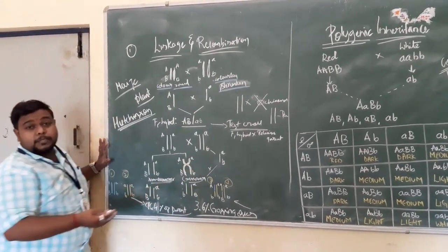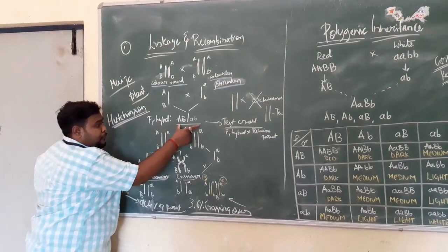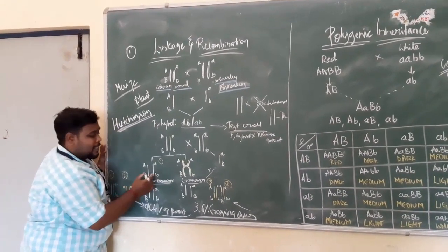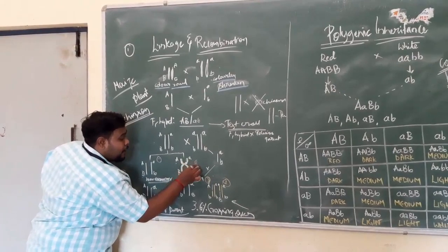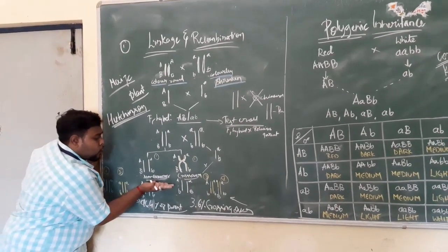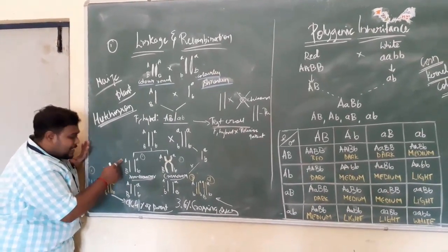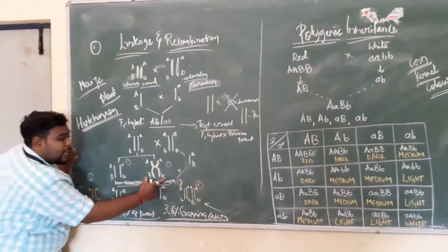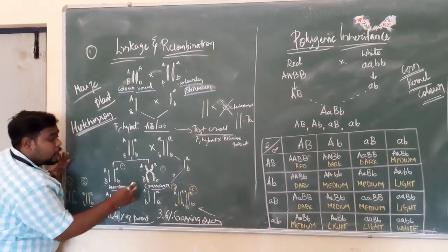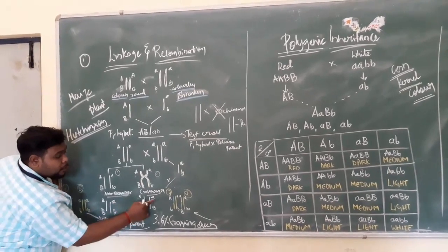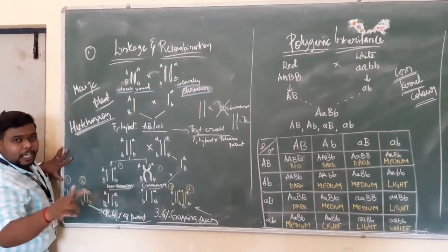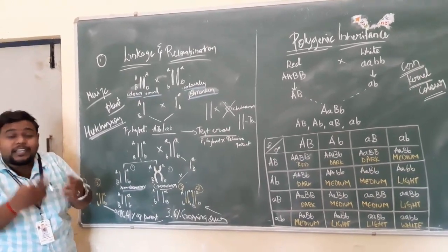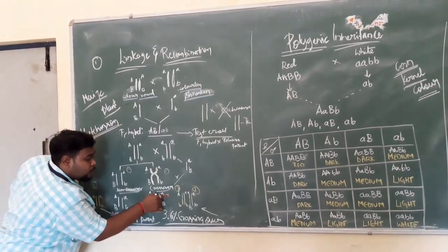So what are the gametes we can expect from the F1 hybrid? We can get capital A, capital B and small a, small b as the non-crossover types. And after crossing over, we get capital A, small b and small a, capital B as the crossover types. So we have one non-crossover set and one crossover set. Two of the alleles have crossed over to give a different combination, resulting in capital A, small b and small a, capital B.